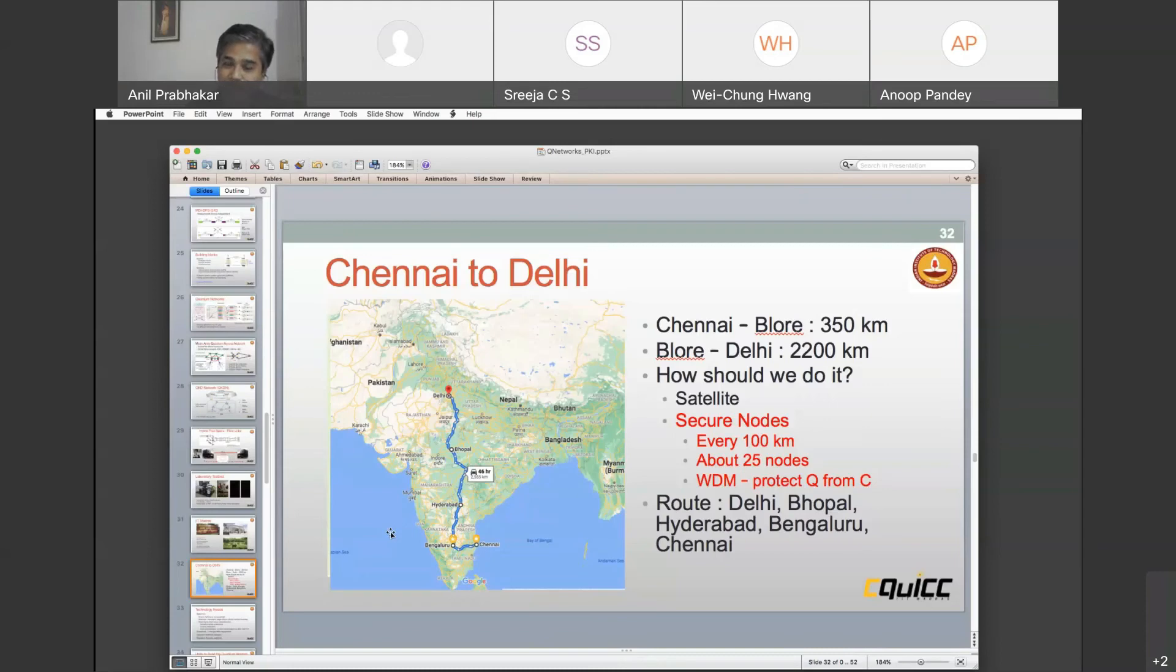We need what are called secure nodes every 100 kilometers. So you need about 25 nodes. Then you go from Bangalore to Hyderabad to Bhopal to Delhi. This is a very ambitious plan. We hope that we will be able to do this over the next few years. From everybody we have talked to, I think they're all excited about it. So I'm hoping that this thing will actually indeed kick off.